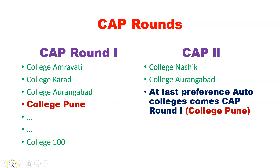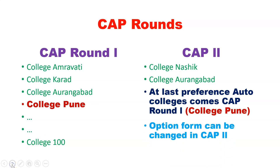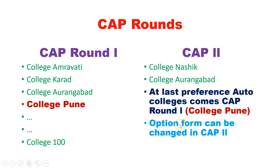CAP round 2 involves the option form change. If you change the option form in CAP round 2, it will not change your CAP round 1 allotment. You will not lose your CAP round 2 eligibility either.